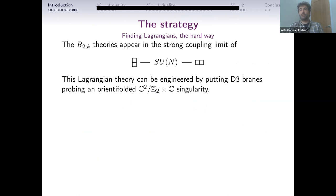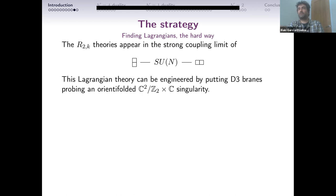So how do you find Lagrangians for these theories? I like to think of this as the hard way, because there's probably a better and prettier way, and I'm hoping somebody listening might understand how to do this better. These are theories that appear in the strong-coupling limit of a simple theory, SU(N) with symmetric and anti-symmetric. We know how to construct this theory in string theory — you put D3-branes on a singularity C²/Z₂ × C, a fairly standard orbifold singularity. You have to introduce an orientifold to obtain the standard representations.